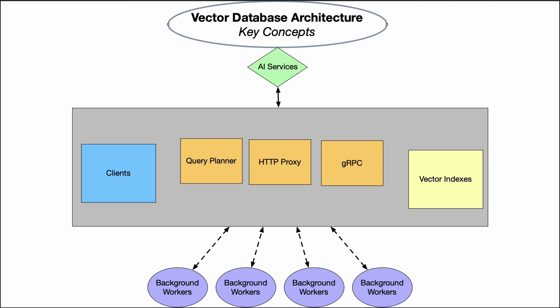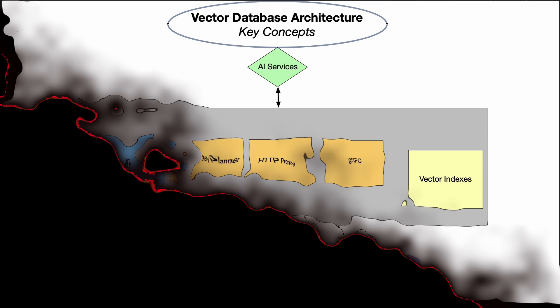With the data replicated across the nodes, you have high availability and fault tolerance, and the system stays operational. This is a new style of system designed to work with AI services, recommendation engines, and also RAG for large language model services. It's important to understand these key concepts so you can deploy this for your organization.